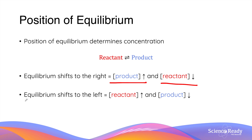Vice versa, when we say that the equilibrium position shifts or moves to the left-hand side, the reactant concentration increases, and at the same time, the concentration of the product will decrease. So keep these two things in mind as we discuss each of the three changes that can be imposed on the equilibrium.